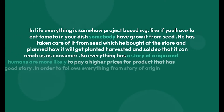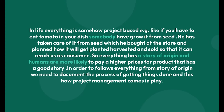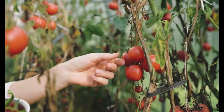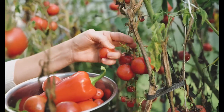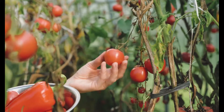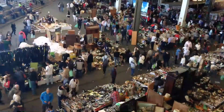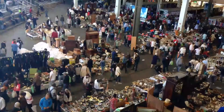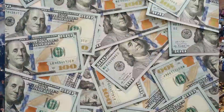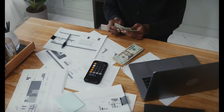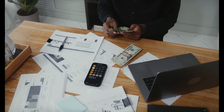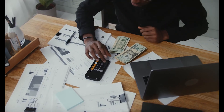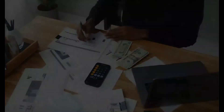In life, everything is project-based. For example, if you have a tomato in your dish, somebody had to grow it from seed, take care of it, plan how it would get planted, harvested, and sold so that it could reach us as consumers. Everything has a story of origin, and humans are more likely to pay a higher price for products that have a good story. In order to follow everything from its story of origin, we need to document the process of getting things done — and this is how project management comes into play.